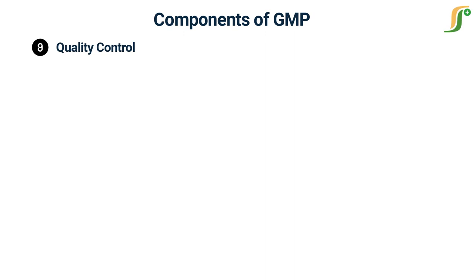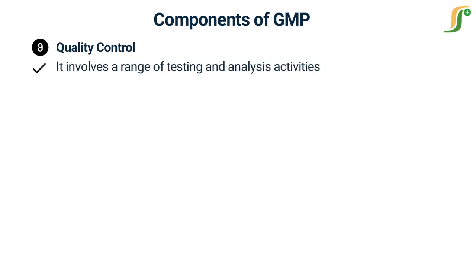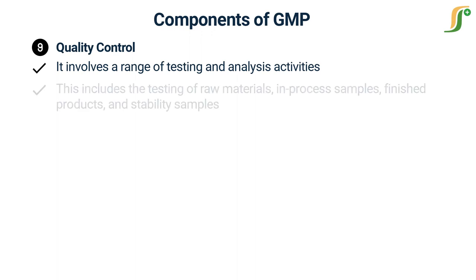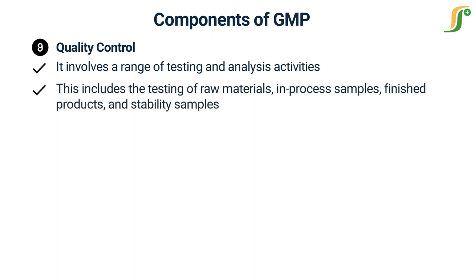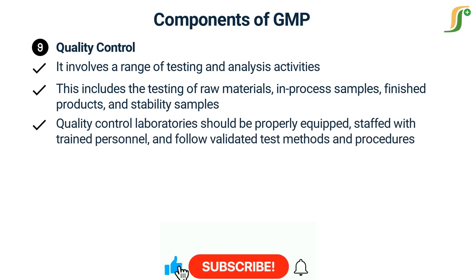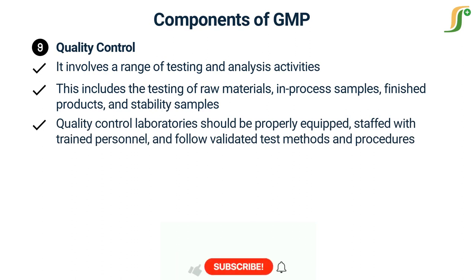The ninth and most important component is Quality Control. Quality control is a crucial component of GMP and involves a range of testing and analysis activities. This includes the testing of raw materials, in-process samples, finished products, and stability samples to ensure they meet predefined quality specifications. Quality control laboratories should be properly equipped, staffed with trained personnel, and follow validated test methods and procedures.